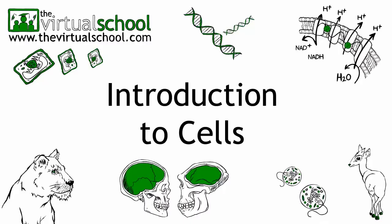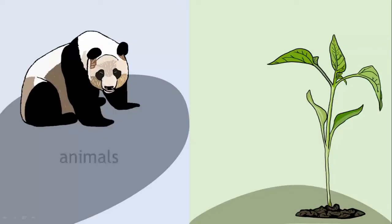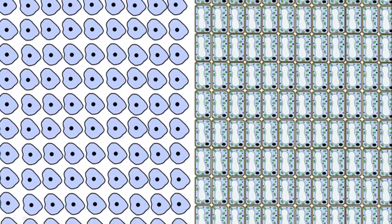The cell is the basic unit of life. Some living organisms such as animals and plants are made of hundreds of trillions of these basic units of life called cells.